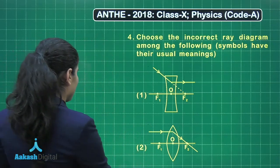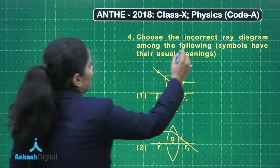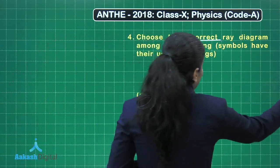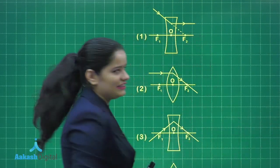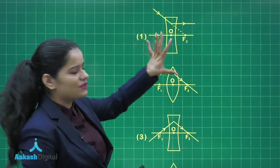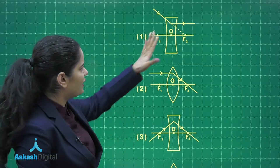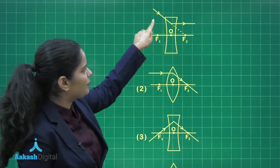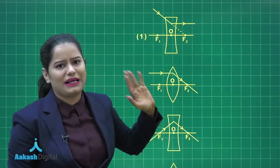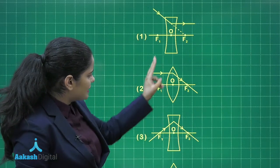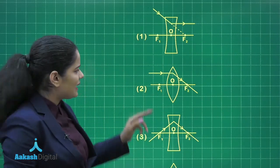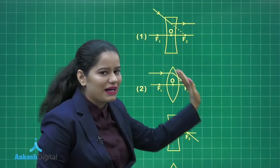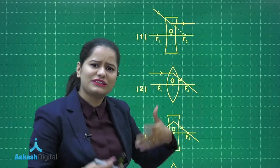Here we have question number 4 which says choose the incorrect ray diagram among the following. We are given 4 ray diagrams. In the first ray diagram, option 1, we have a concave lens and a ray appearing to pass through F2 that becomes parallel to the principal axis, which is correct. Option 2 shows a convex lens with a ray initially parallel to the principal axis that after refraction passes through focus F2, which is again correct.